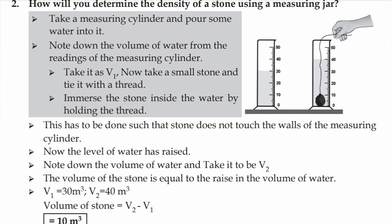The volume of the stone is equal to the rise in the volume of water. For example, V1 = 30 mL and V2 = 40 mL. So volume of stone = V2 − V1 = 40 − 30 = 10 mL. Then use D = m/v to find the density. This completes the question and answer explanation.